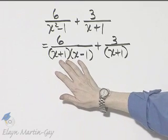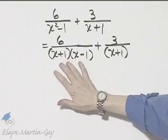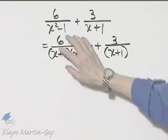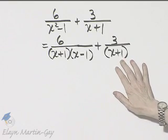So what do we do next? We rewrite each rational expression as an equivalent expression but with this denominator. Now obviously this one's already done, so let's concentrate on this expression.